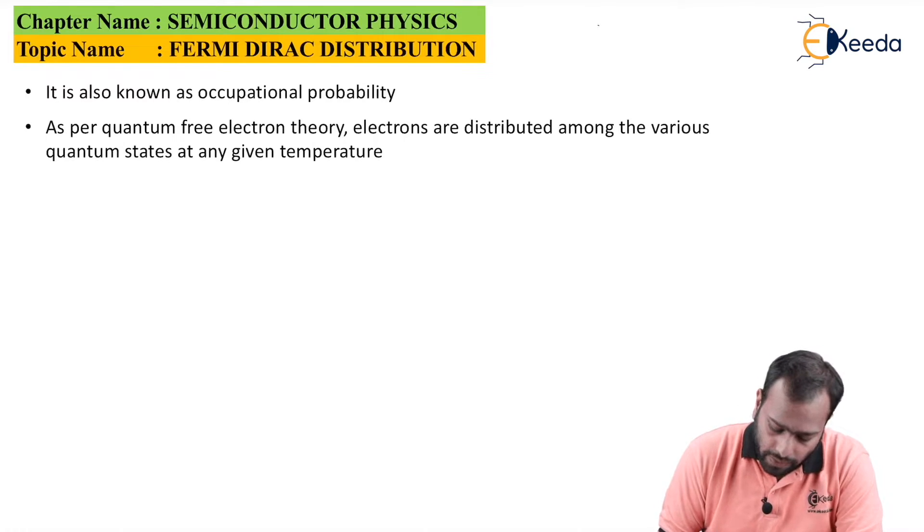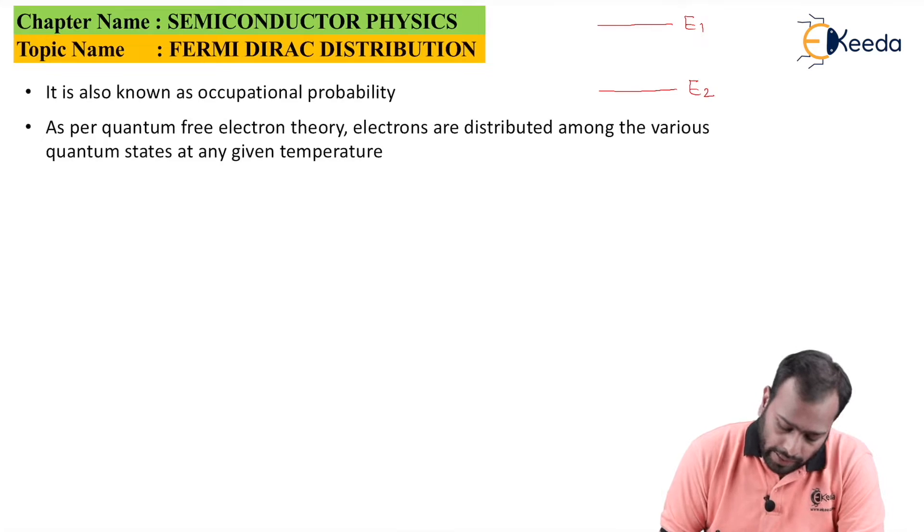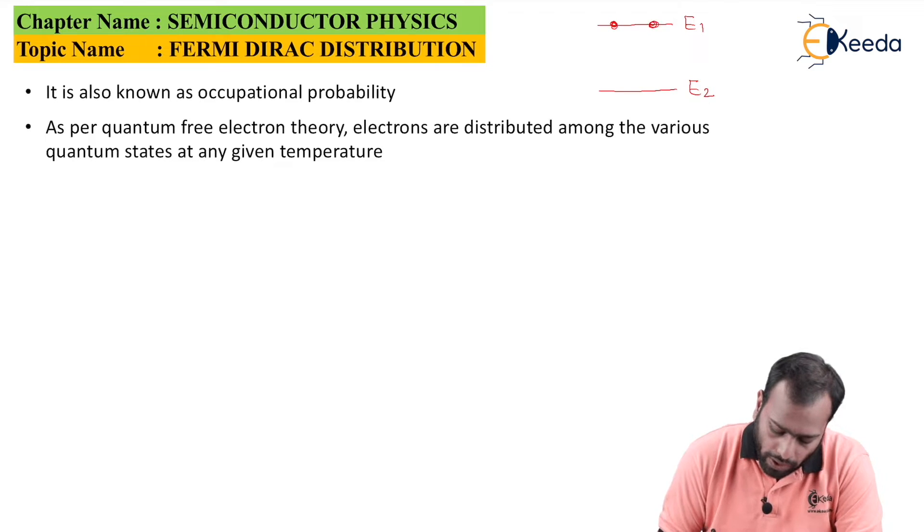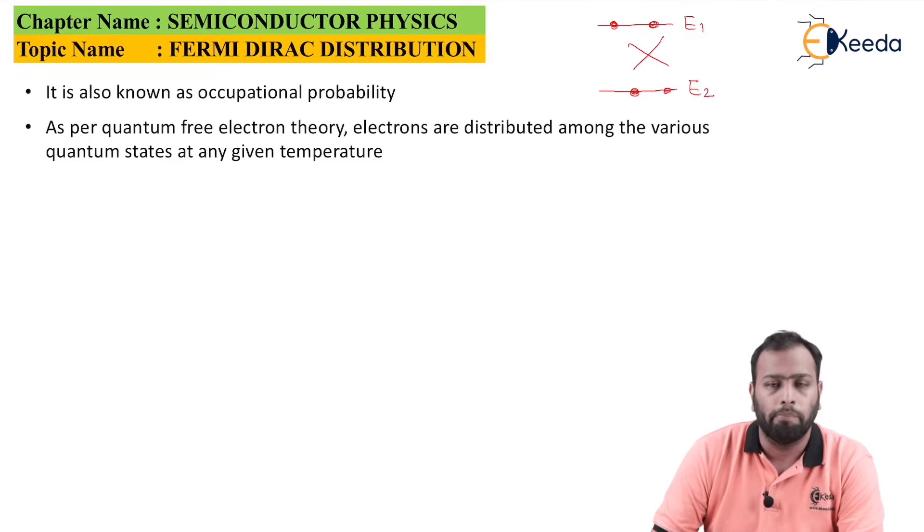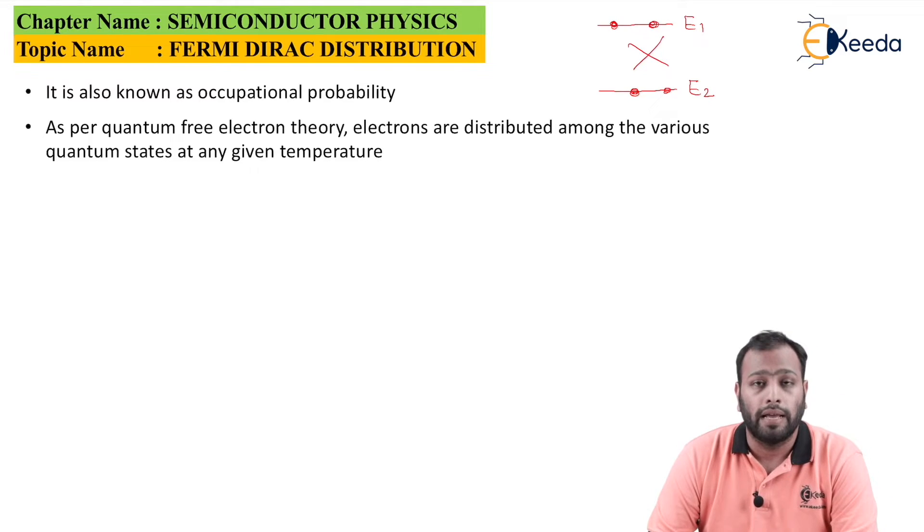This means that if this is my energy state E1 and this is the next energy state E2, the electrons could be found at E1 or at E2, but it won't be found anywhere between. Or you can say electrons won't be present anywhere between the quantized energy states. Quantized energy states are the states which are fixed where the electrons will be found.